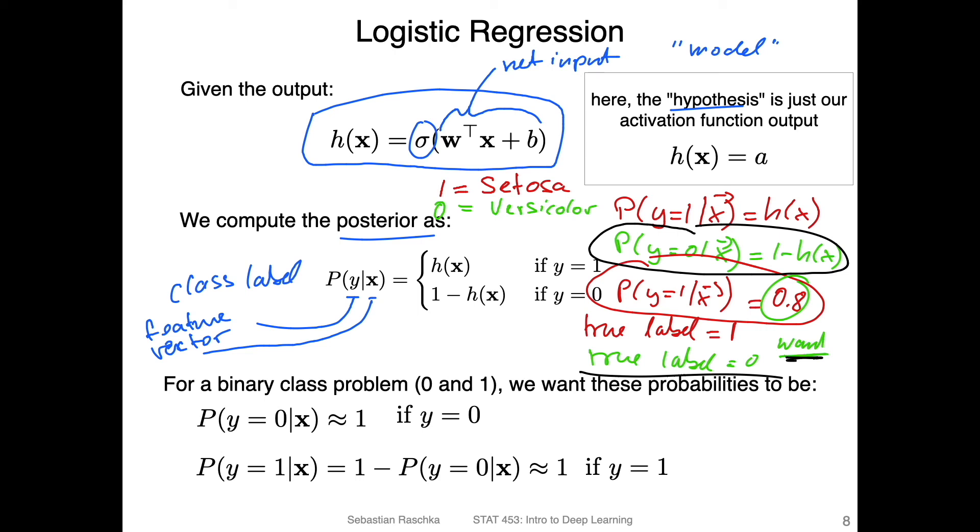That is what I'm summarizing here at the bottom of this slide. If we have a binary classification problem with possible class labels zero and one, what we want is these probabilities to be close to one for the respective class. If the true class label is zero, then we want the probability for y equals zero to be close to one. If the true label is one, then we want the probability for this scenario to be close to one. Which probability we want to be maximized depends on the true label here.